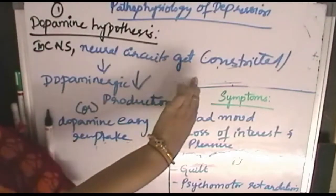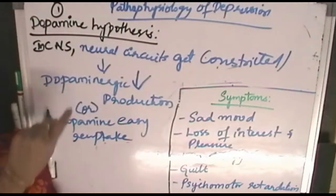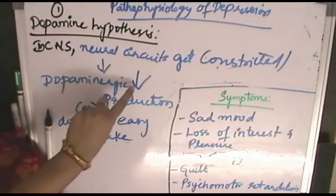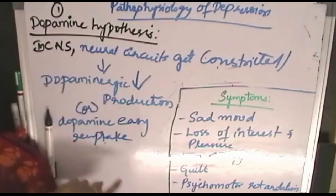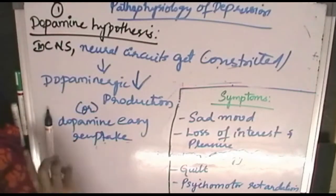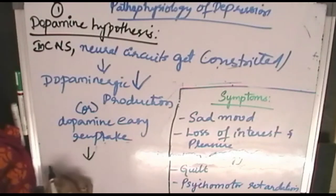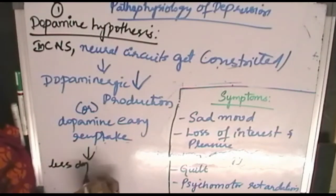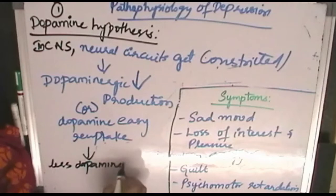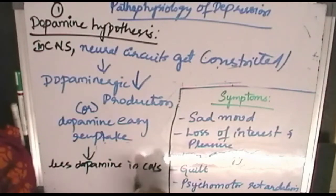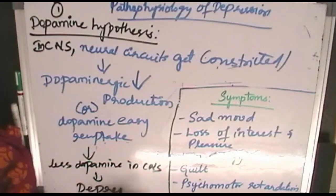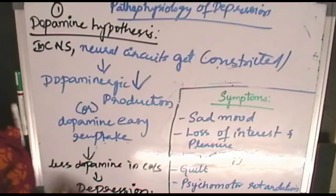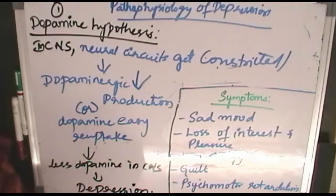Due to any factors in the CNS, neural circuits get constricted or contracted, which leads to dopaminergic low production, dopaminergic hypoproduction, or dopamine easy reuptake. This all leads to less dopamine in the CNS, and when there is less dopamine in the CNS, it causes depression. This is one hypothesis stating the pathophysiology of depression.